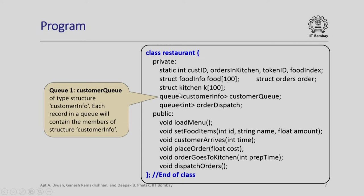Next, we look at the formation of queues. We define a queue of type customer_info, which we call customer_queue. Similarly, we have a queue called order_dispatch. We have now the public members, which are essentially the functions we will be writing: load_menu, set_food_items, customer_arrives, place_order, order_goes_to_kitchen, and finally dispatch_orders. This is the typical sequence in which activities will happen, and for each of these we shall have different functions. This ends the class definition.